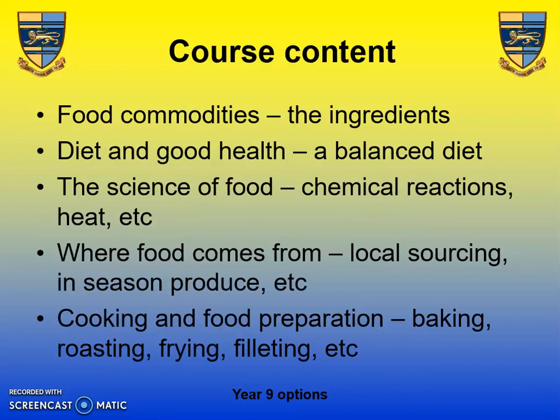The course content covers food commodities — looking at the ingredients you use, different types of ingredients such as fruit and vegetables. You'll look at how to form a balanced diet by presenting recipes with a mixture of ingredients. You'll also look at the science behind food, such as chemical reactions, how you use heat, different types of sugars, and raising agents in baking.